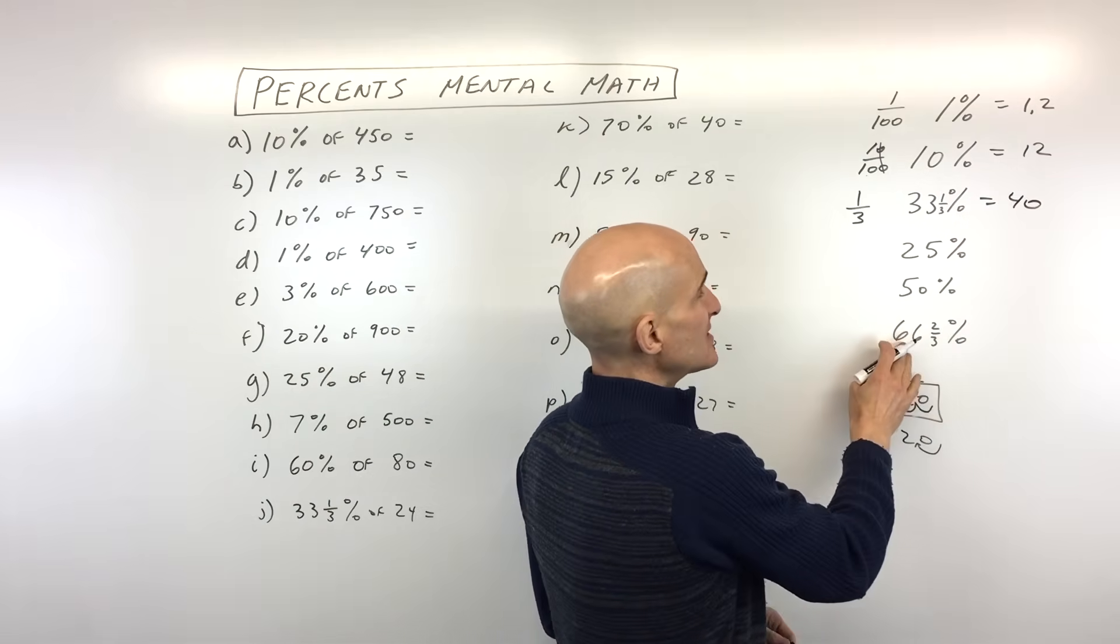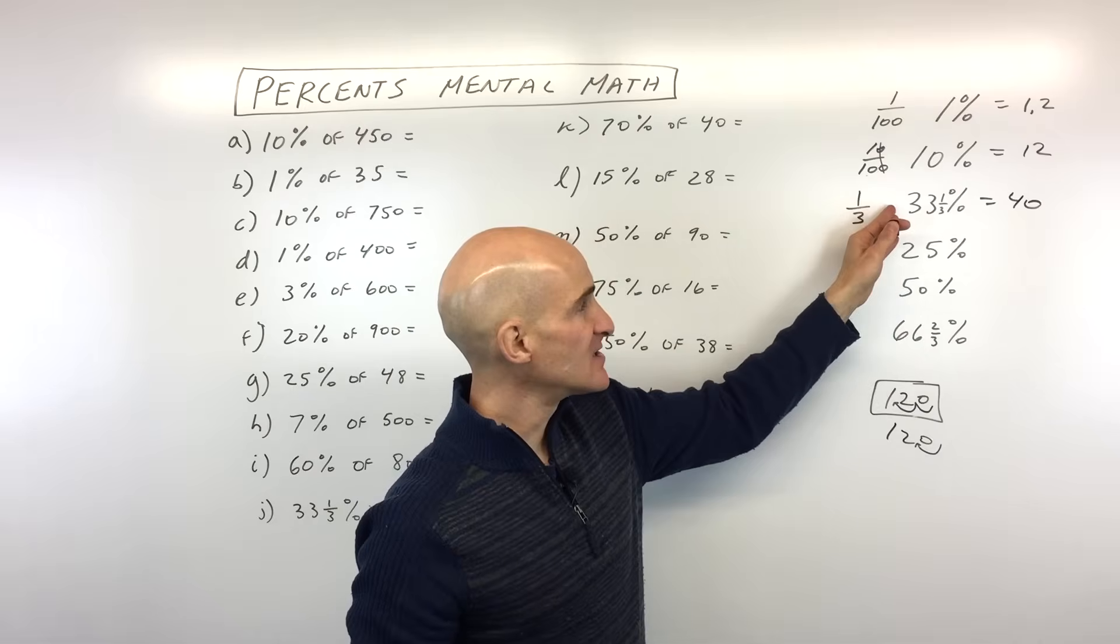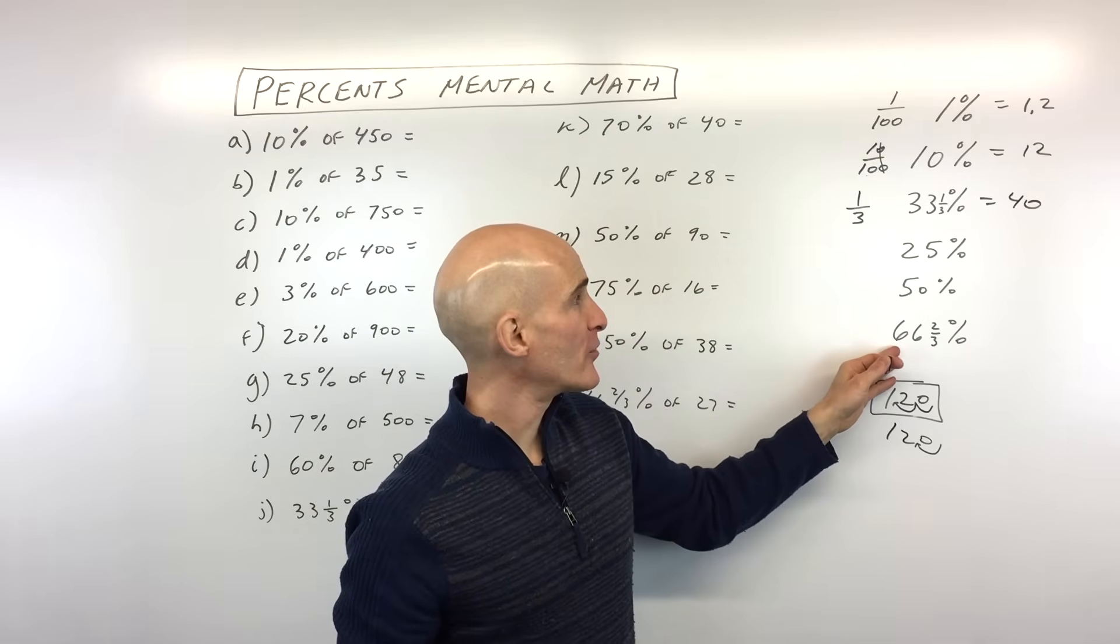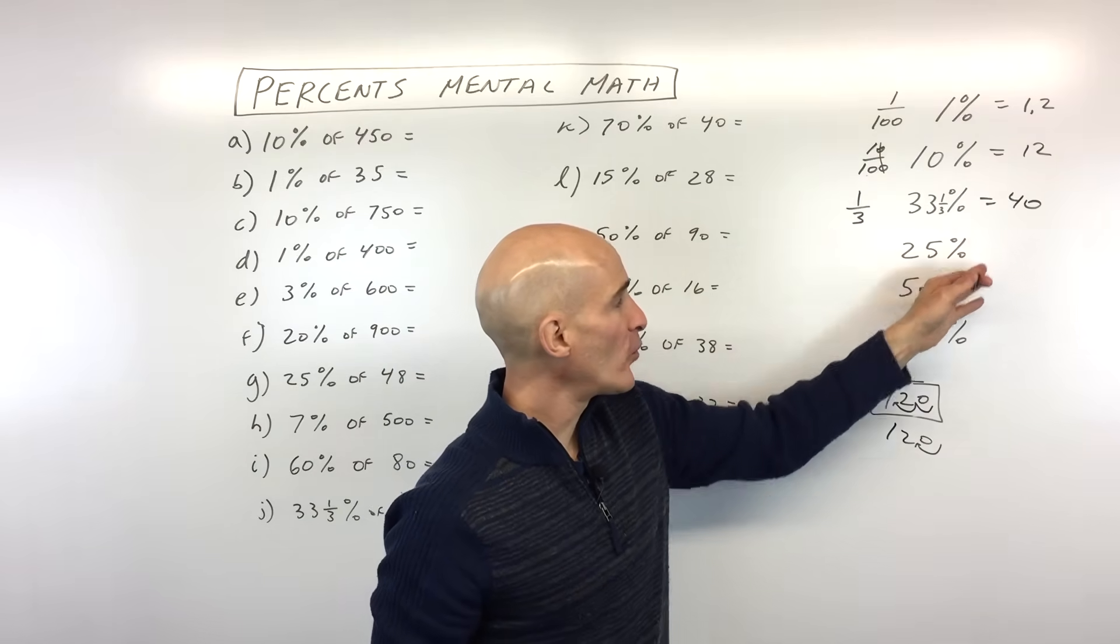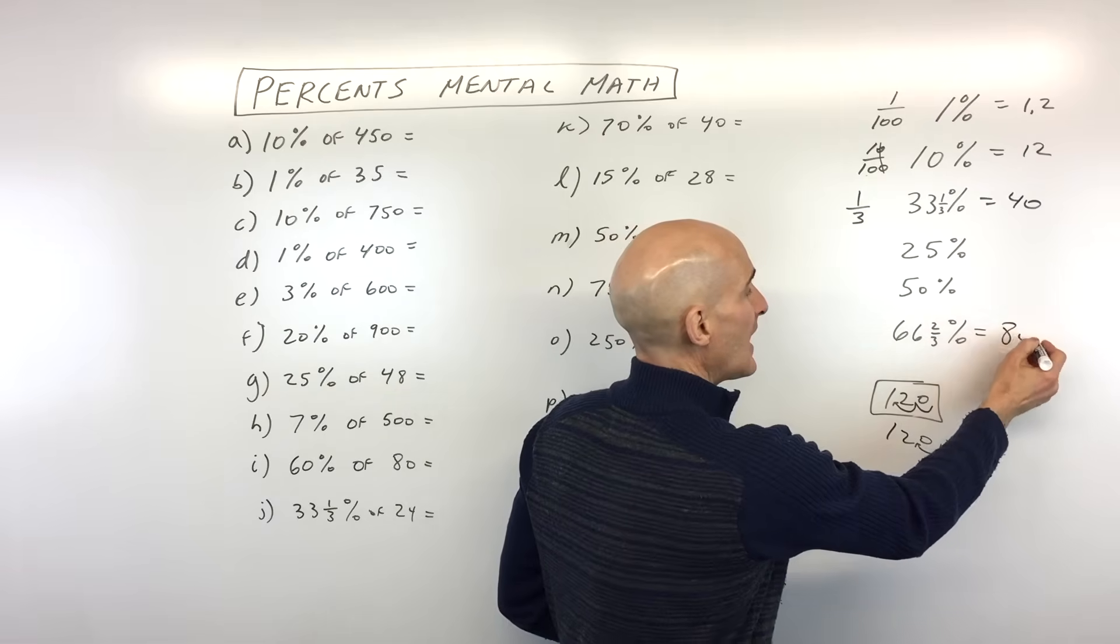Say, for example, we wanted 66 and two thirds percent. That's double 33 and one third percent. So that's going to be double 40. That's going to be equal to 80, right?